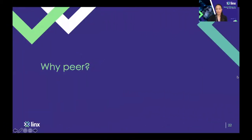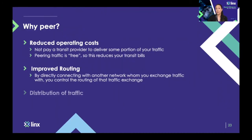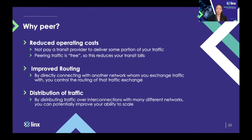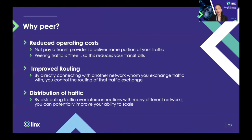So why do networks peer? Reduced operating costs can be a big one if you're a small network relying entirely on an upstream provider for your interconnectivity. If you can take a portion of that traffic and instead exchange it at an exchange point directly with the networks you're trying to reach for free, that can reduce your operating costs. Improved routing is another one, because if you exchange traffic directly with those networks you can decide how that traffic is being exchanged. And distribution of traffic is the third one, because if you peer with many different networks at an exchange point you can improve your ability to scale.